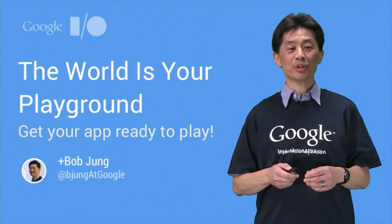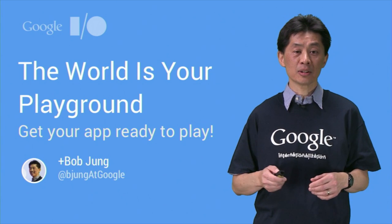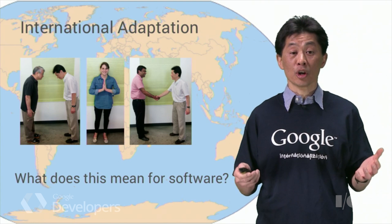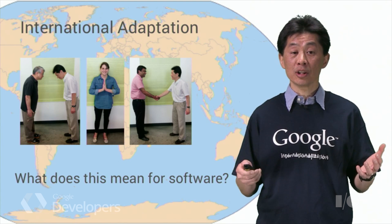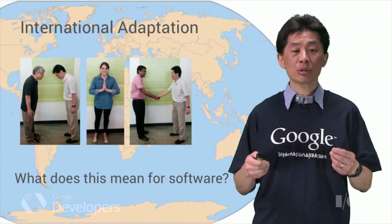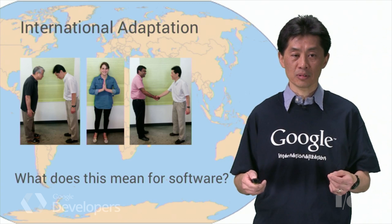Hi, my name is Bob Jung. I manage internationalization at Google. We know language and culture differ across the globe, and adapting your app correctly is critical to providing a great user experience.